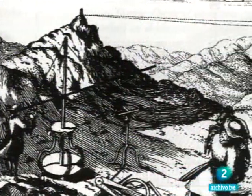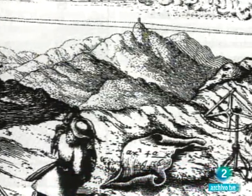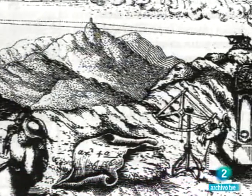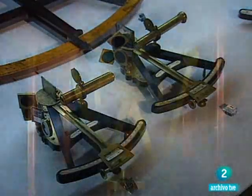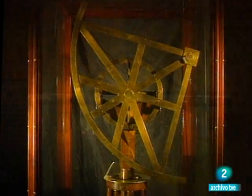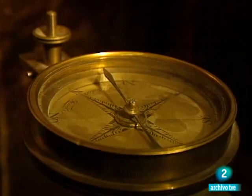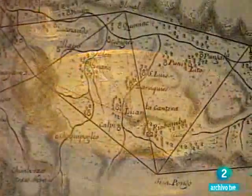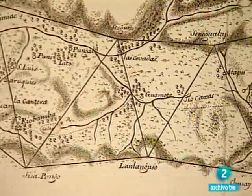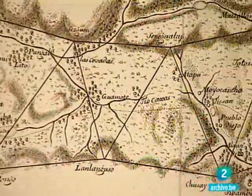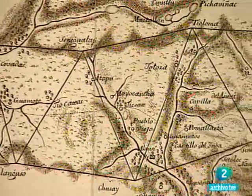Su paciencia, mirando siempre puntos alejados del horizonte, les ganó entre los habitantes de la zona el apelativo de los caballeros del punto fijo. Con instrumentos como estos, entre los que se encontraban un cuadrante de pie, un nivel geodésico, una brújula o un barómetro, los expedicionarios se pusieron a la tarea de medir la distancia lineal y la distancia angular entre dos puntos, para poder determinar la longitud de un grado de meridiano. Los puntos elegidos fueron las ciudades de Quito y la de Cuenca.